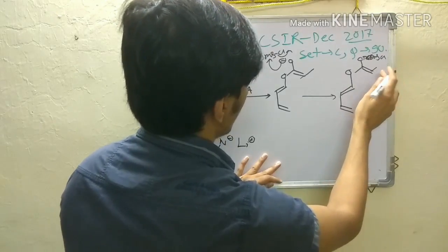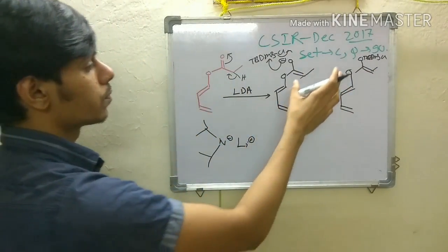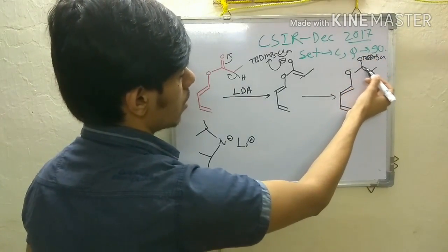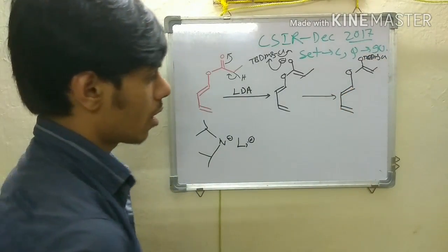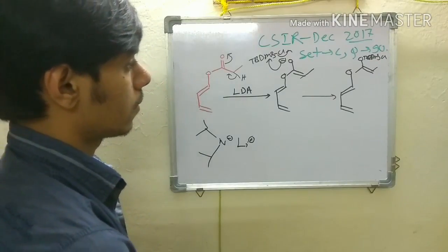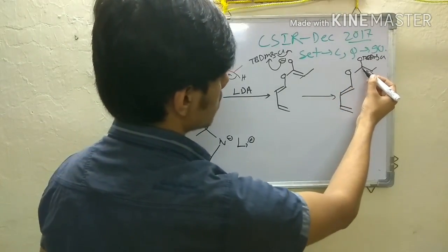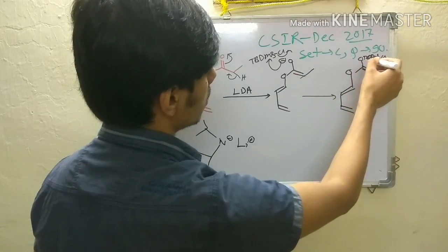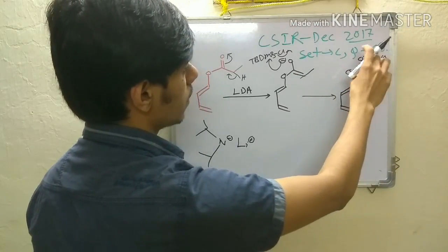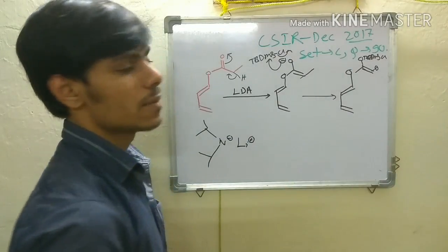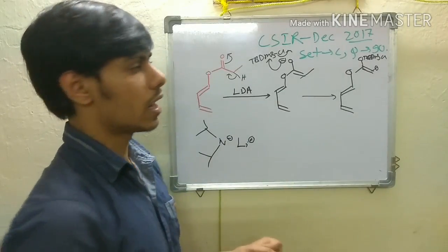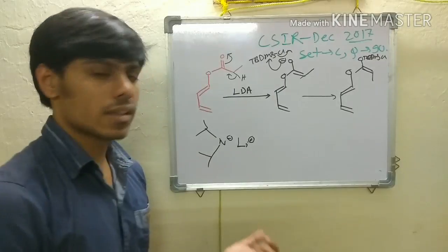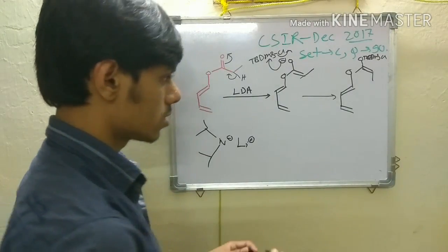You also have to consider the stereochemistry of this double bond. The double bond geometry will be such that this group is trans to the TBDMS group, because the TBDMS group is very large and the E-isomer (trans) is preferred. That gives you the E-enol ether. The exact geometry doesn't matter for the final product's key stereochemistry, but this is the intermediate.